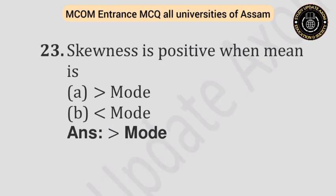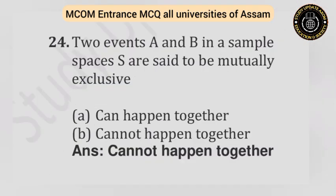Question number twenty-three: Skewness is positive when mean is — Option A: Greater than mode. Option B: Less than mode. Answer is greater than mode. Question number twenty-four: Two events A and B in a sample space S are said to be mutually exclusive if they — Option A: Can happen together. Option B: Cannot happen together. Answer is cannot happen together.